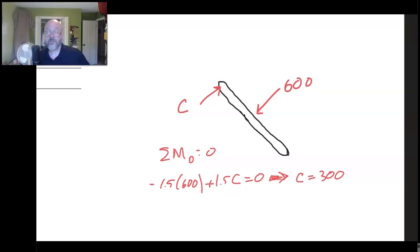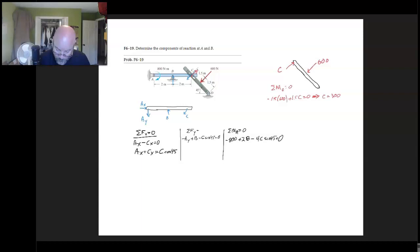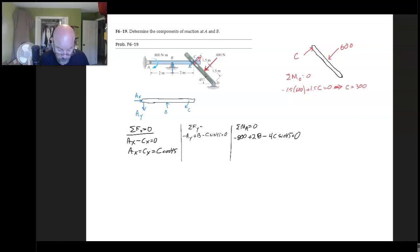Okay, so I want to take my 300 and I want to dump it in right here. Okay, now I'm not going to go through all this algebra. You should do that on your own. But when you do that, you're going to end up with B is equal to 824.3.